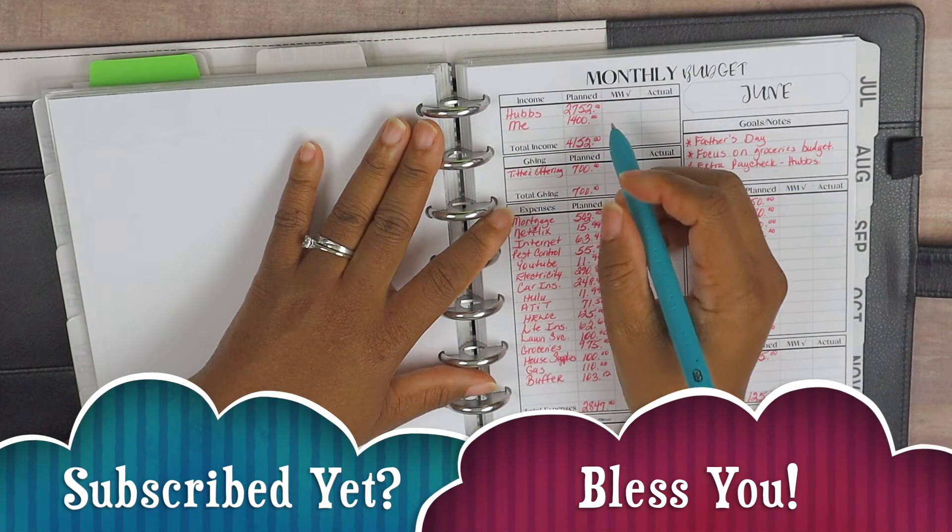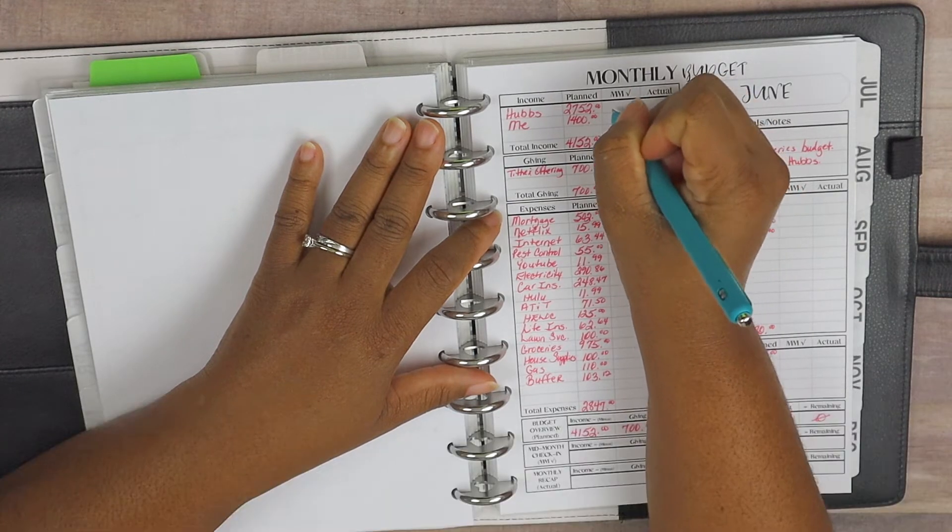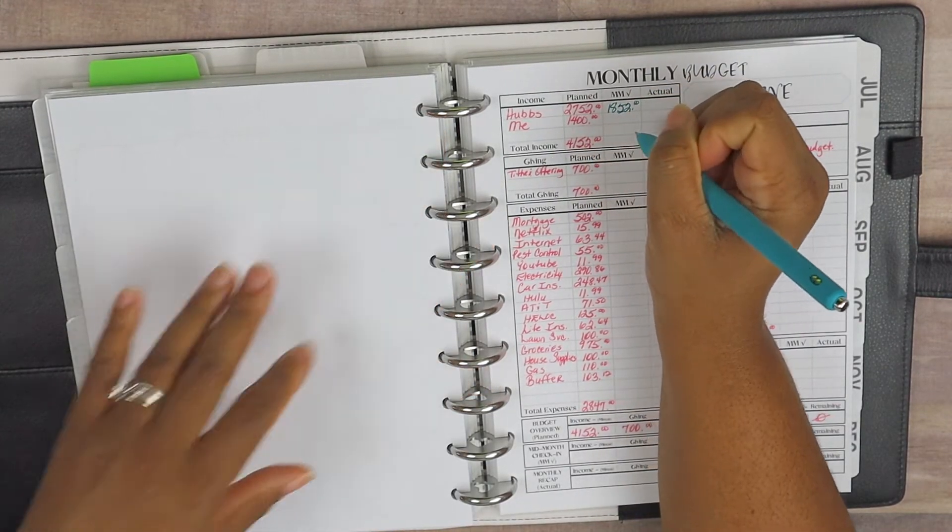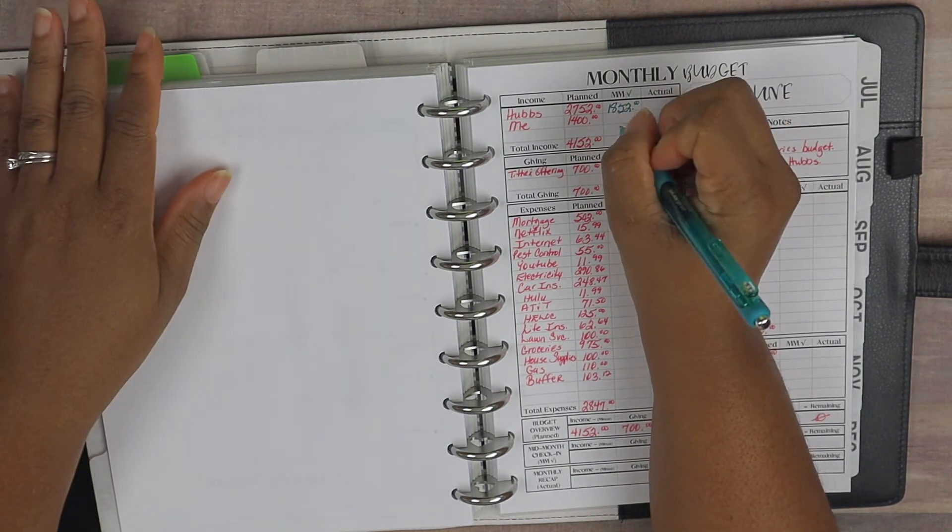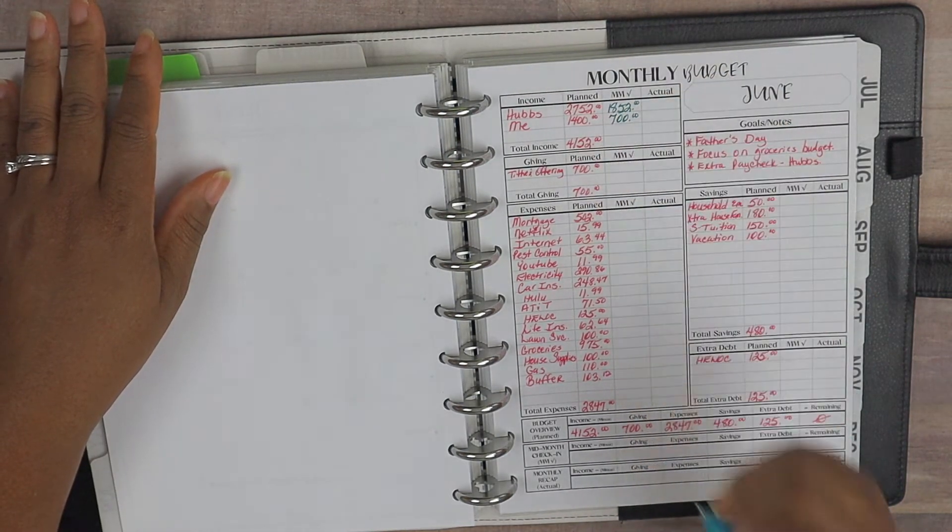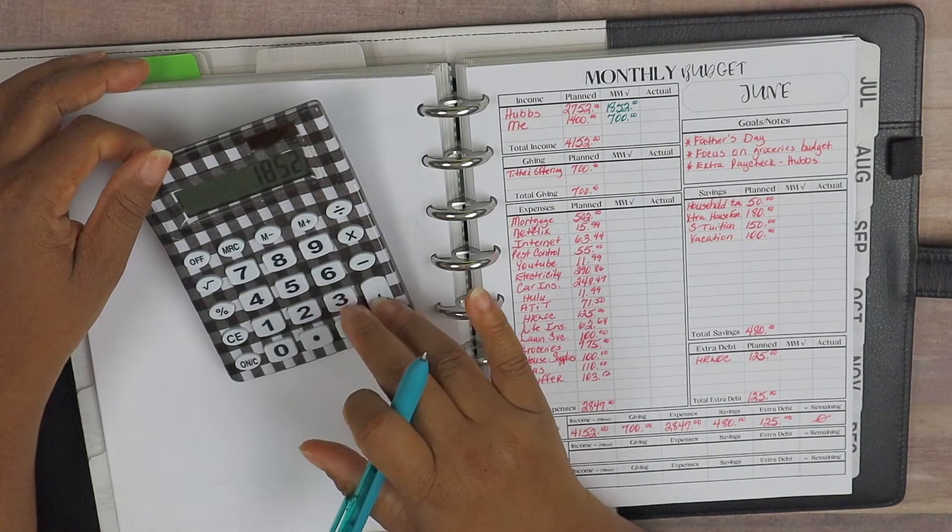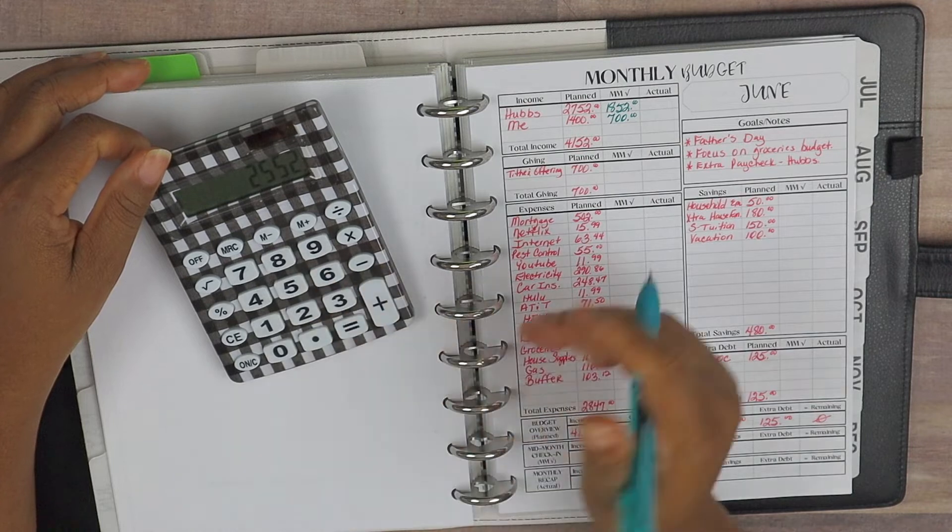All right guys, so for our mid-month check: hubs, we did receive $1,852 direct deposit into this account thus far, and then for me, $700 direct deposited into this account thus far. All right, so we'll go ahead and get these totals in. So we are at $2,552 for mid-month check-in as far as our income.